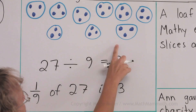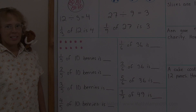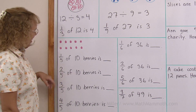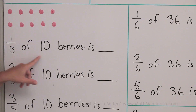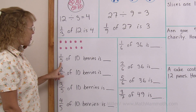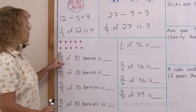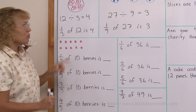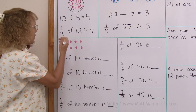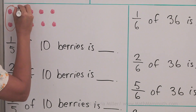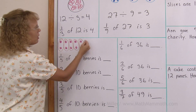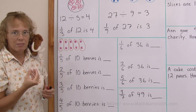Next we have some other types of berries — maybe strawberries. One fifth of ten berries is how many berries? One fifth part means we need to divide these berries into five groups, five parts. So you could do it this way: each group has two berries, and one of these groups is one fifth part of the total.